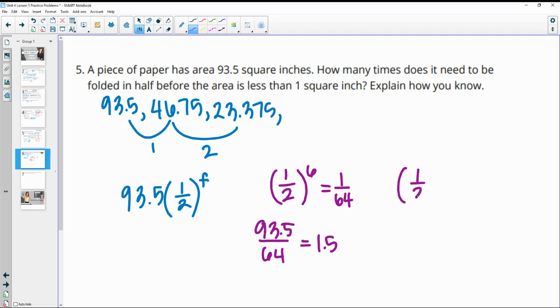So if we look at it to the 7th, multiplying by 2 again, we get 1 over 128. So now we're going to end up with 93.5 divided by 128. So this is going to be less than 1 because the bottom number is bigger. So we end up with 0.73 here. So that's going to be after 7 folds.